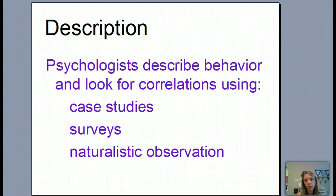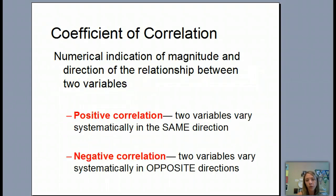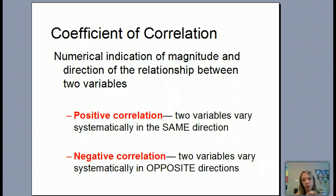We're going to have a little bit of math associated with correlation because we're going to be looking at something called the coefficient of correlation. The coefficient of correlation is a number that indicates how closely two things are related. For example, we're going to look at self-esteem and depression — how often does someone who's depressed have low self-esteem, and how often are those two things correlated or found together?